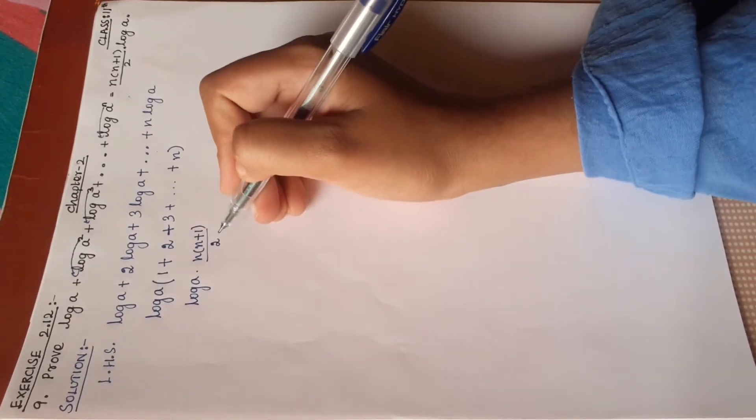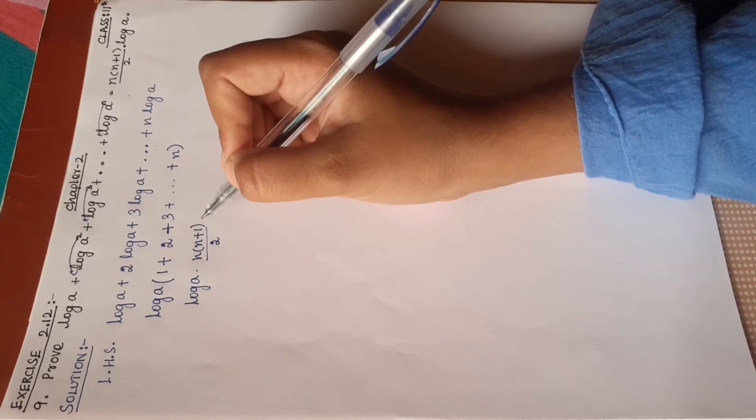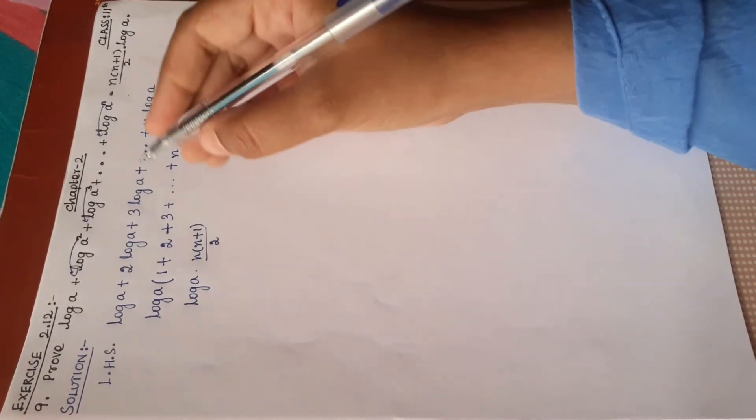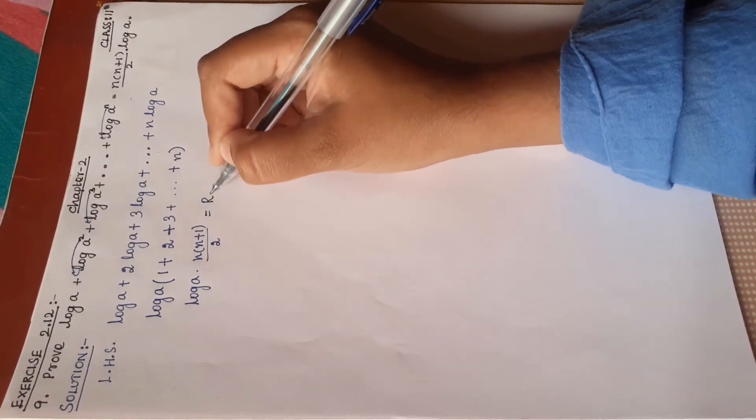Hence, log a × n(n+1)/2 is what our right-hand side is, which is equal to RHS.